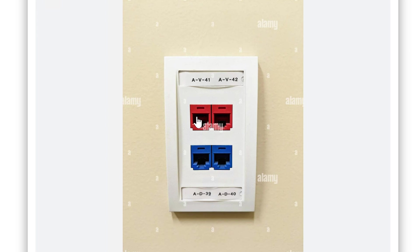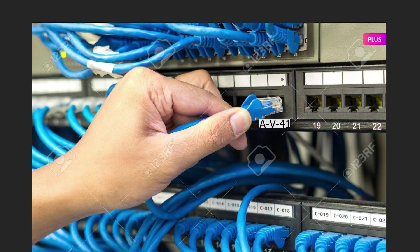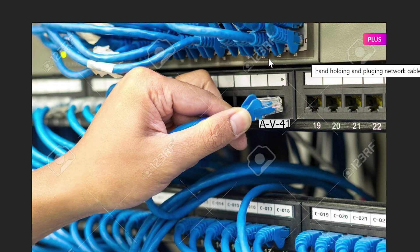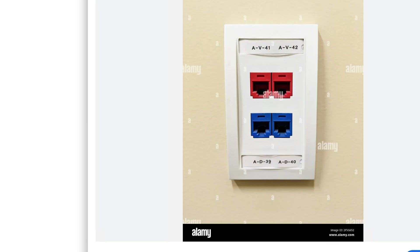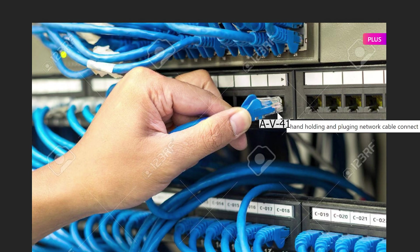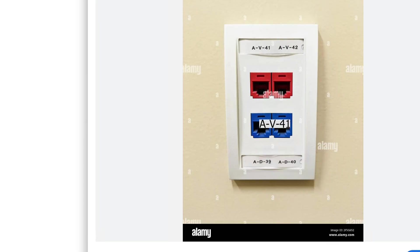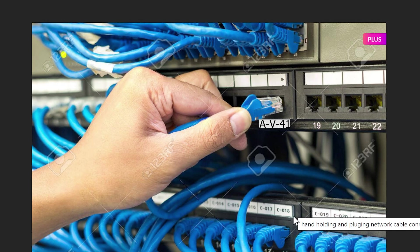Let's go into the data closet. You physically walk to the data closet or server room and look for the port to make sure it's connected physically. Here's an example of what you would see in a data room: a switch with numbered physical ports. Let's pretend port 18 is the one we need — this person is physically connecting, or patching, the cable into port 18 so that it has a connection back to the wall plate.